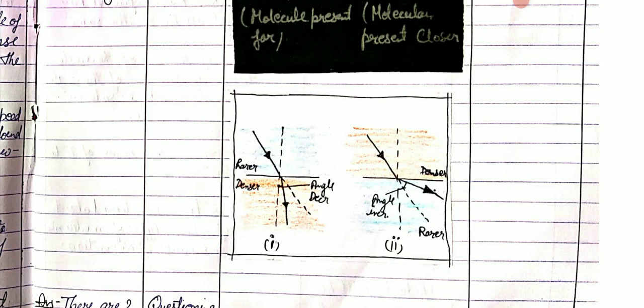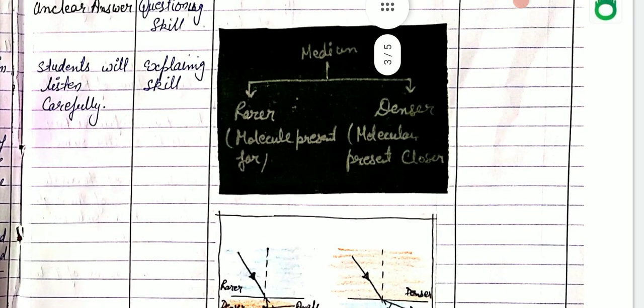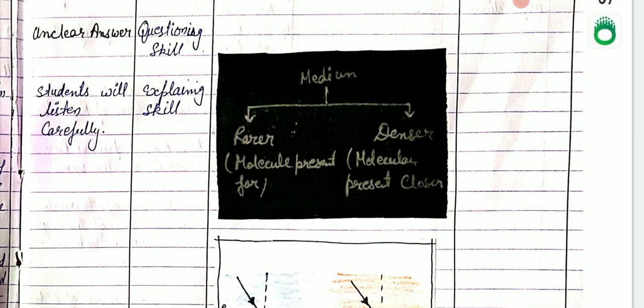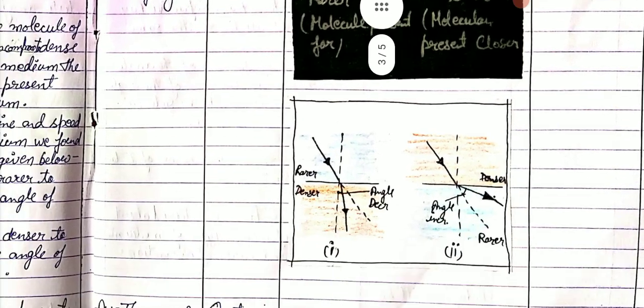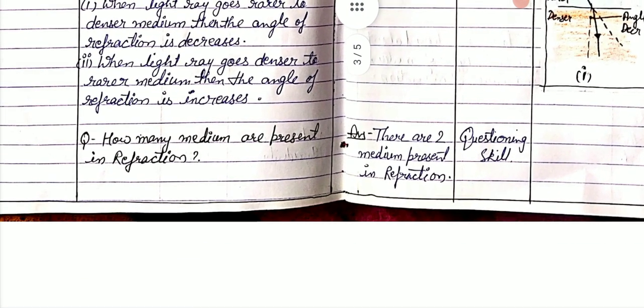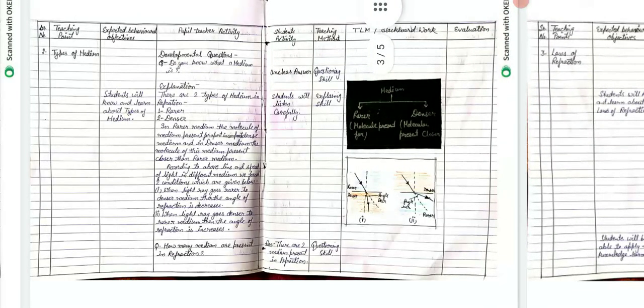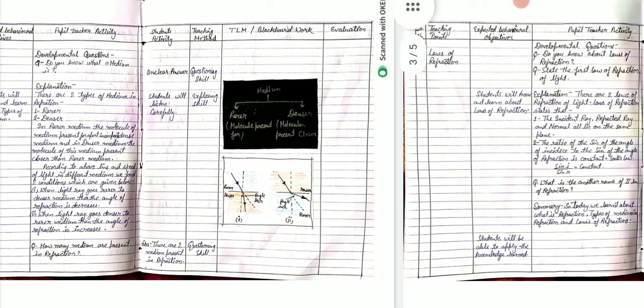During this explanation we use a chart, and this is the miniature of the chart. We also do some blackboard work. The last question: how many mediums are present in refraction? Student answers: there are two mediums present in refraction.